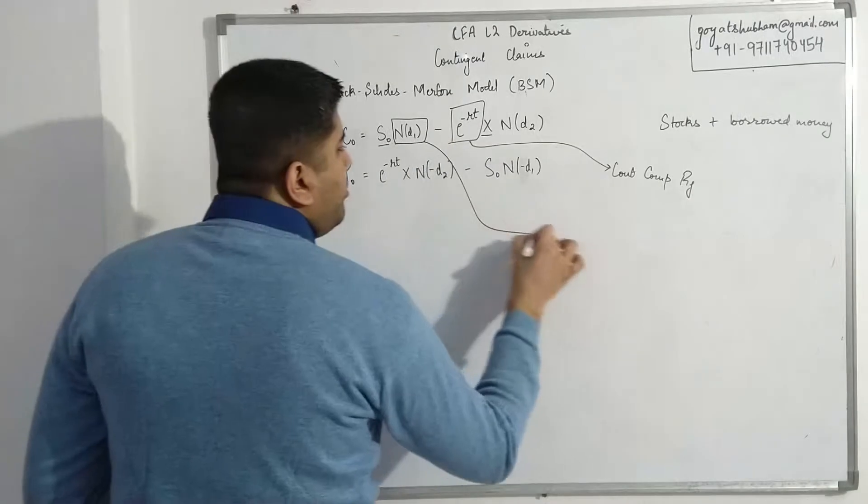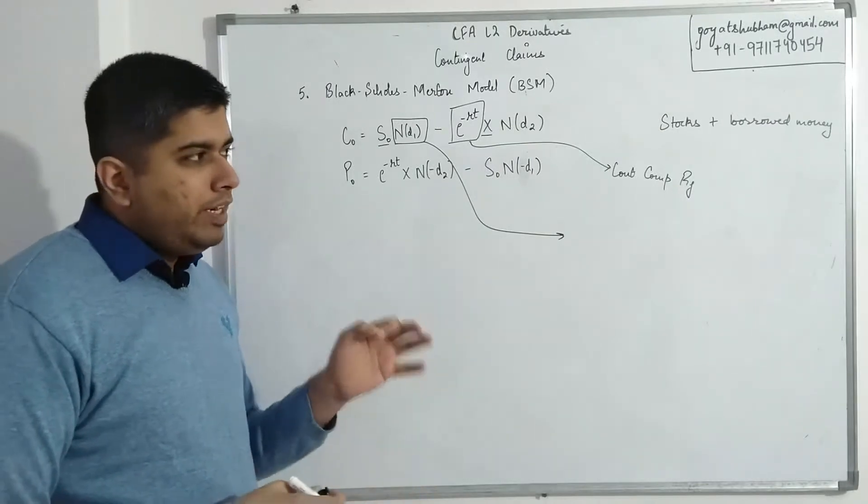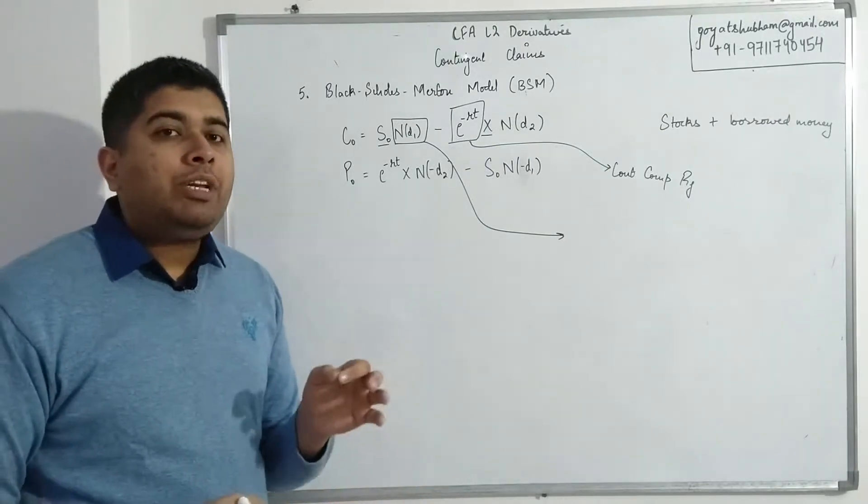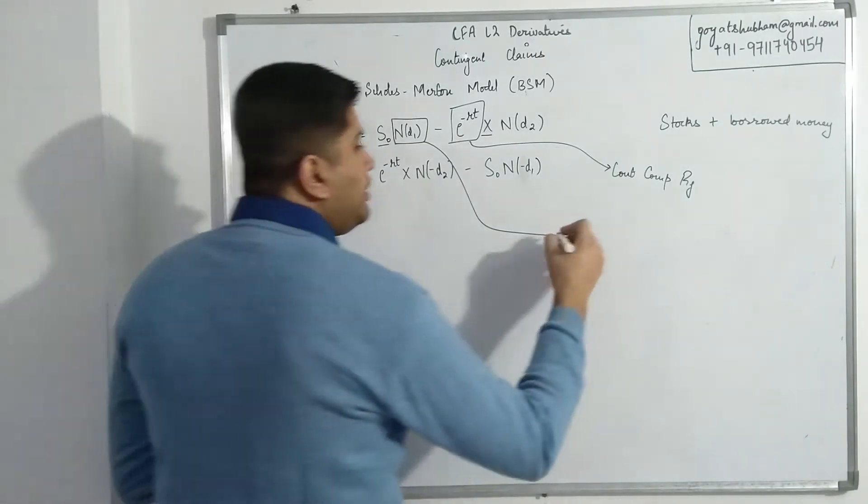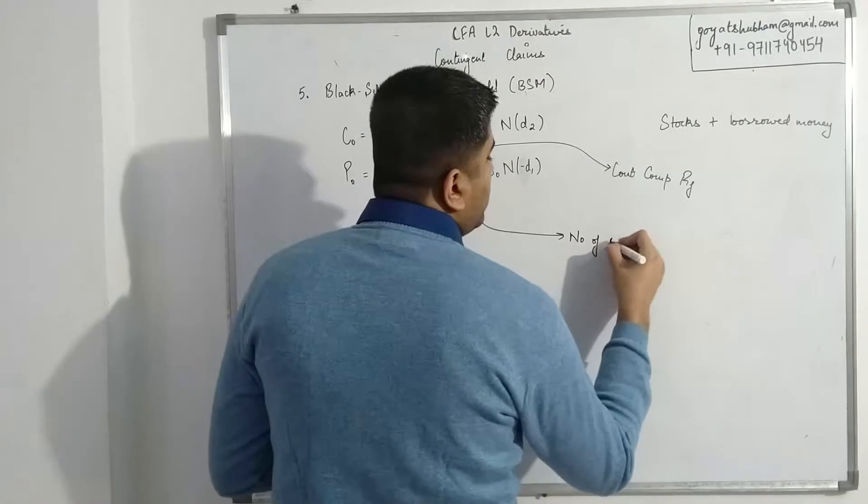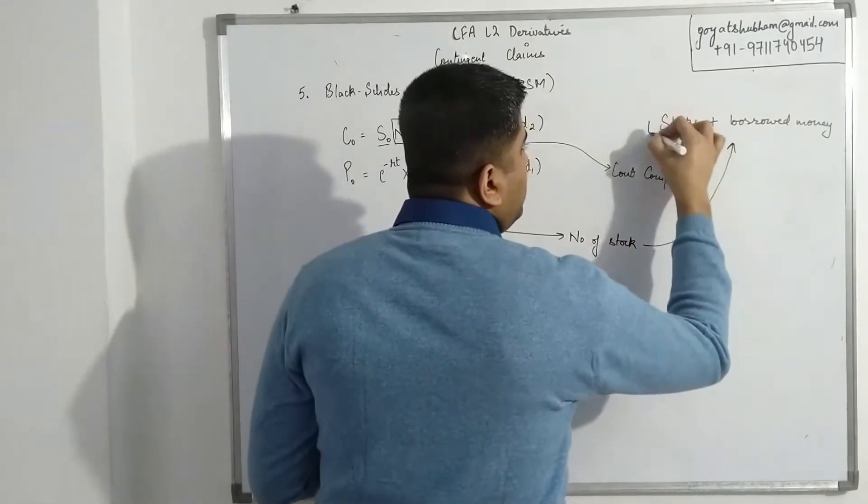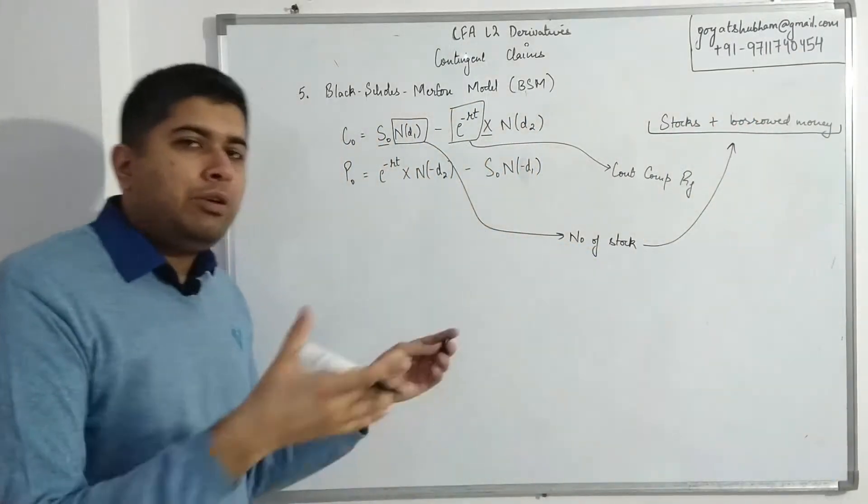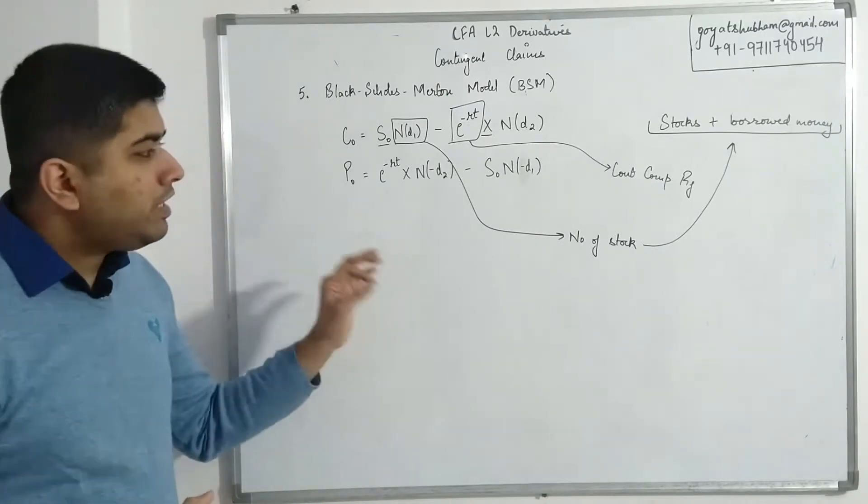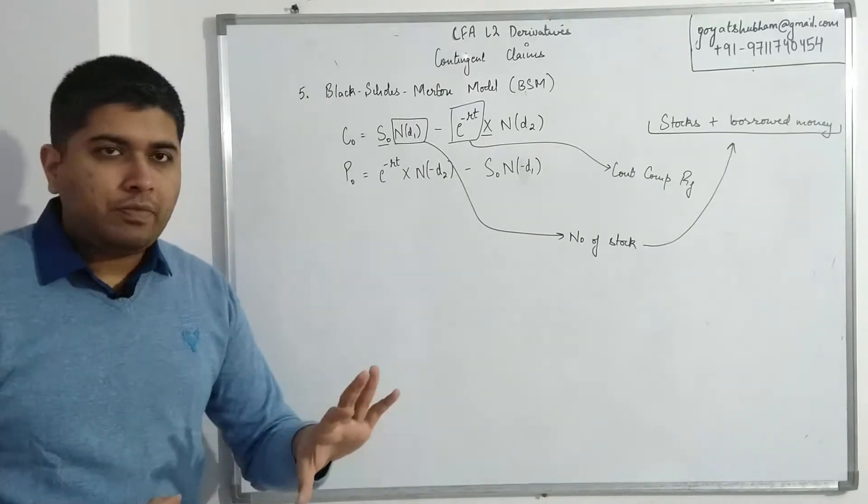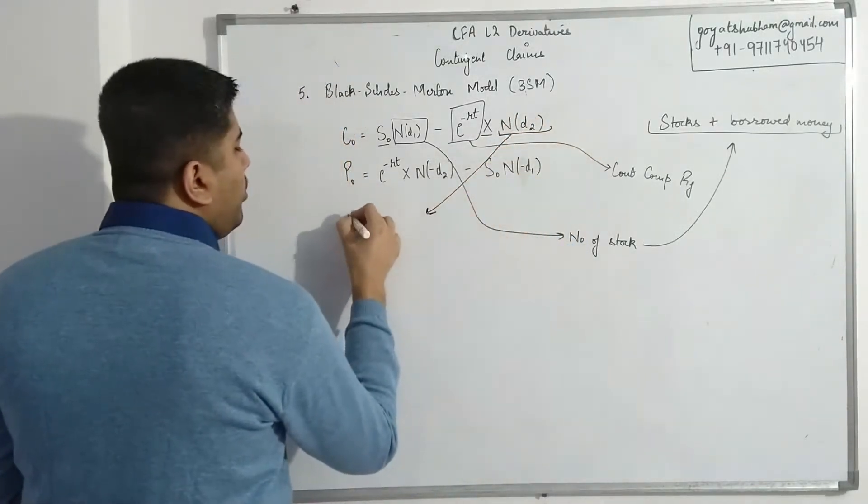The second thing to note is this value N(d1). If you remember in case of the example we did for arbitrage using binomial models, we did a calculation to decide how many shares should I actually buy. N(d1) is nothing but that—this is number of stocks that you have to buy in this particular transaction so that you are able to replicate the payoffs of a call option.